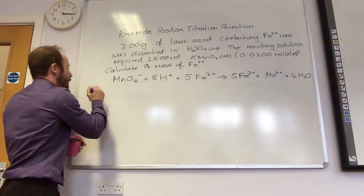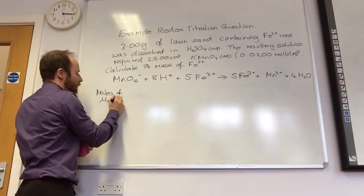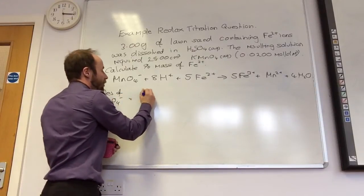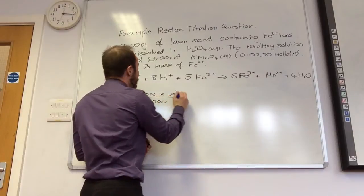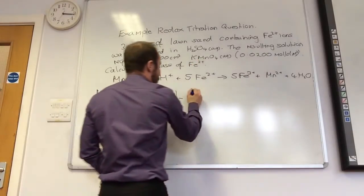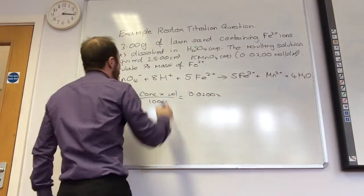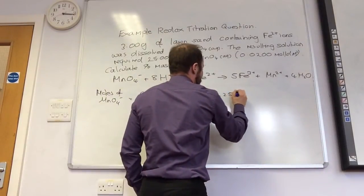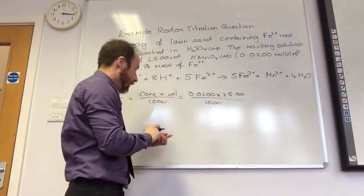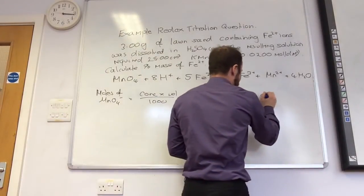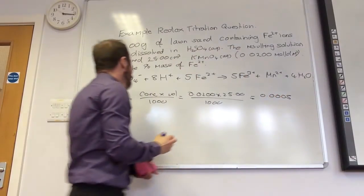Right. So, moles of MnO₄⁻ equals concentration times volume over 1000. Concentration is 0.0200. My volume is 25.00. Over 1000.